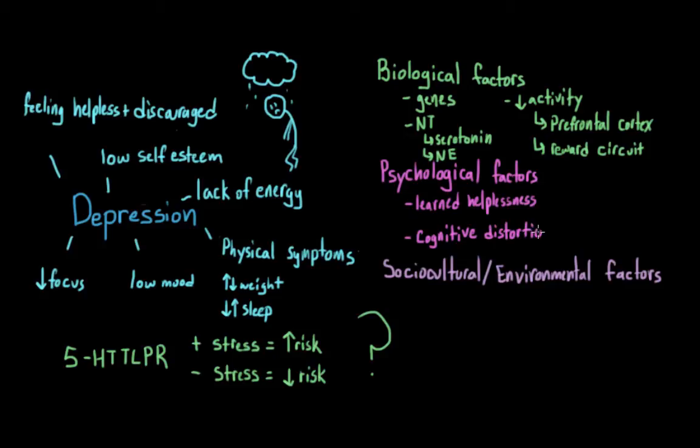Another cognitive theory about depression focuses on the concept of attribution or explanatory style. Now as we go about our daily lives, we naturally try to understand and explain the events that go on around us. And when we do this, we can either attribute the things we see to internal or external causes. So is it something that I did or is it something that happened because of something that is completely out of my control? Did I get a bad grade on a test because I didn't study? That would be an internal cause. Or did I get a bad grade because the teacher made a really unfair test, which would be an external cause.